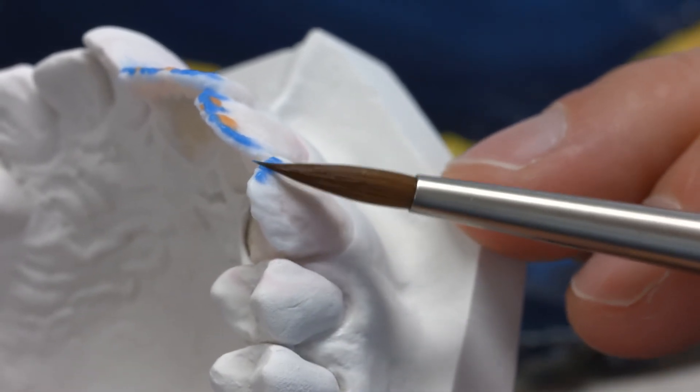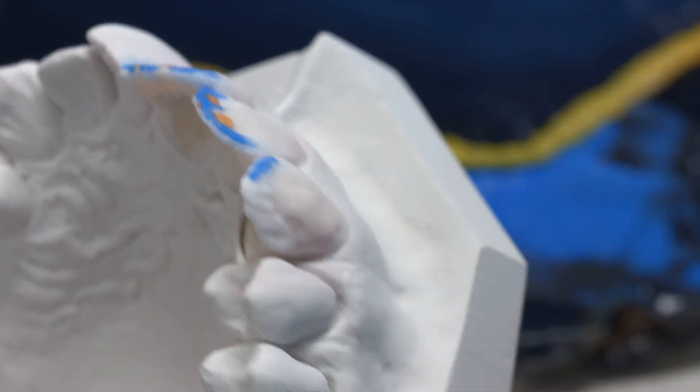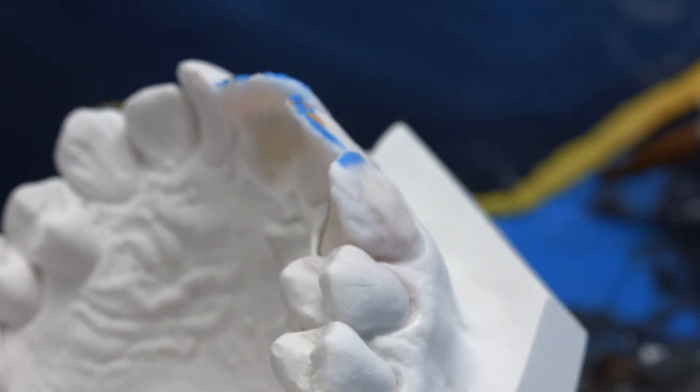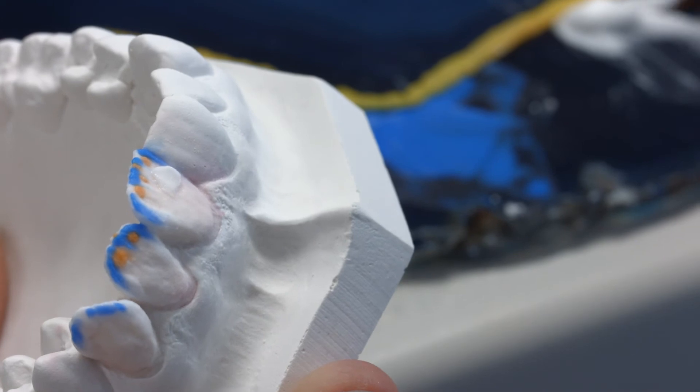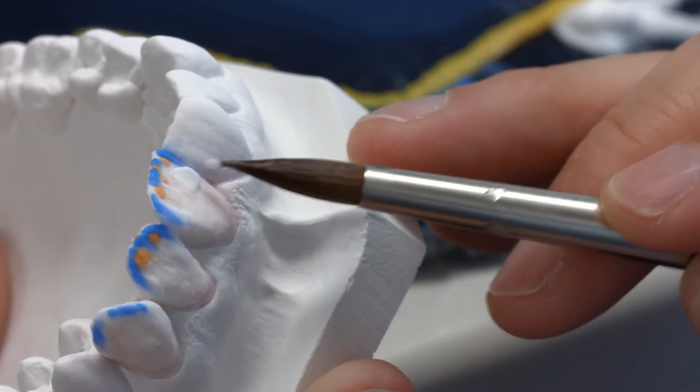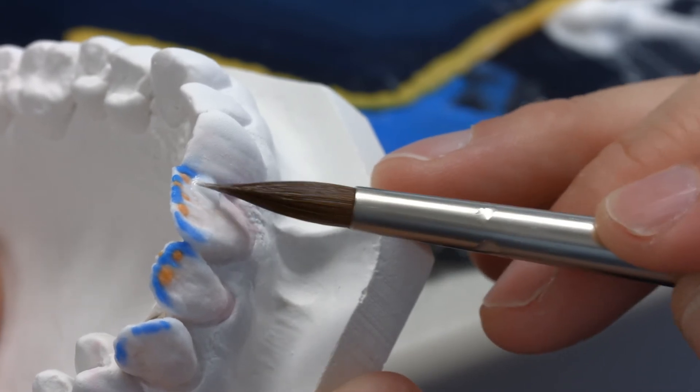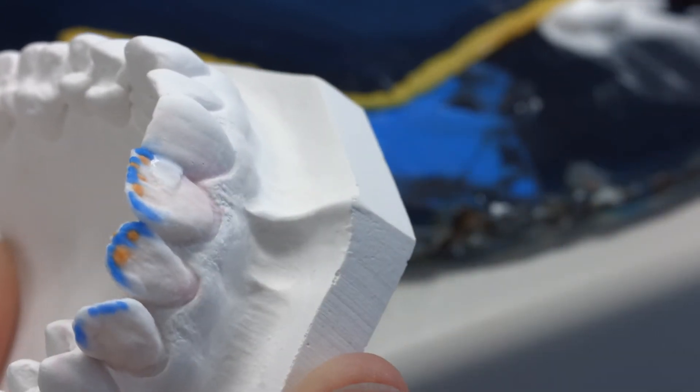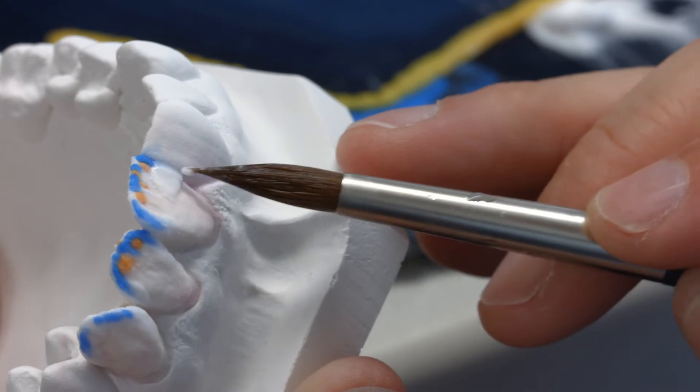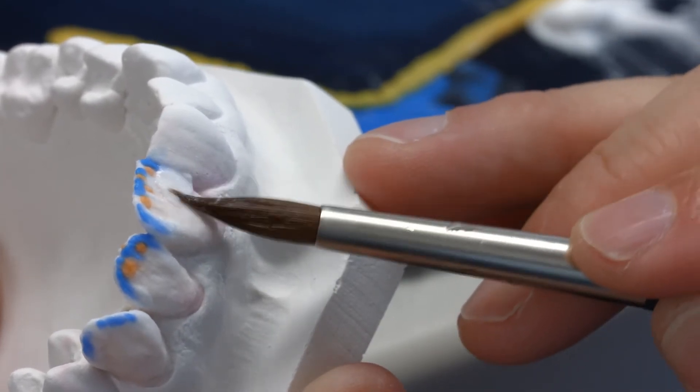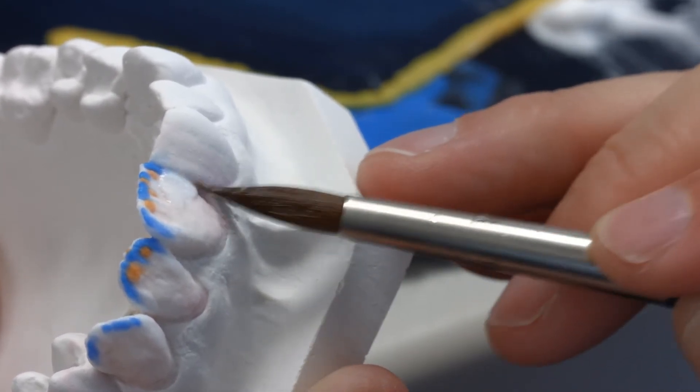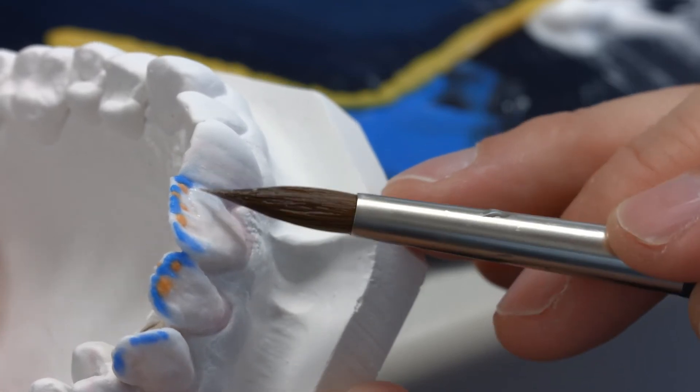Then, place the mamelon materials on the incisal third of the labial surface by outlining the mamelon shape. Individually layer the opal effect materials to obtain a natural-looking translucency in the incisal third. Apply a thin layer of IPS Style Ceram Inter-Incisal White Blue in the central incisal region. This increases the brightness of the restoration.